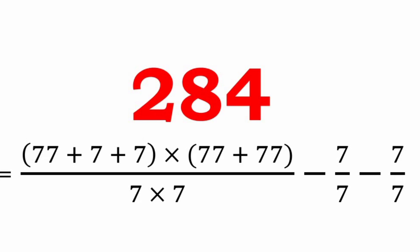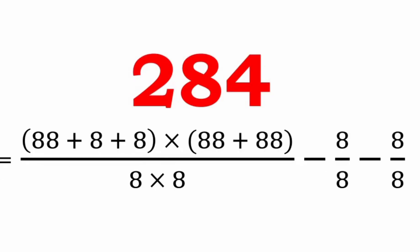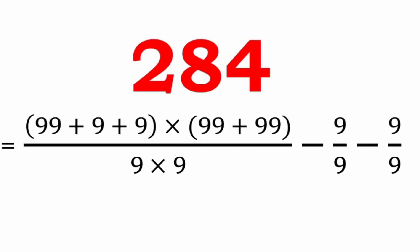The seventh representation uses the digit 7: (expression involving 7s) whole divided by (7 into 7 minus 7/7 minus 7/7 minus 7/7). Using 8: (88 plus 8 plus 8 into expression) whole divided by (8 into 8 minus 8/8 minus 8/8). Finally, using 9: (99 plus 9 plus 9 into 99 plus 99) whole divided by (9 into 9 minus 9/9 minus 9/9).